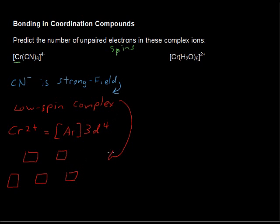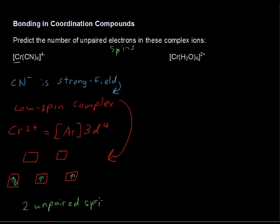For the low spin complex, that means we have more paired electrons or paired spins. So we would have up and then down, and then we still have two up. So the answer is two unpaired spins, or more typically called unpaired electrons — two unpaired spins.